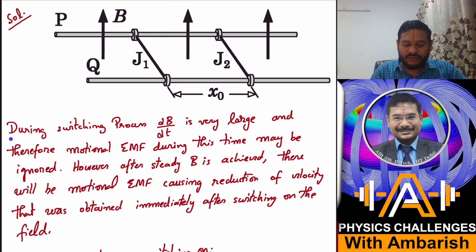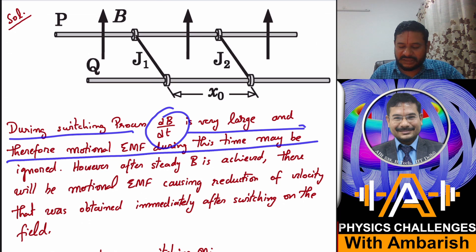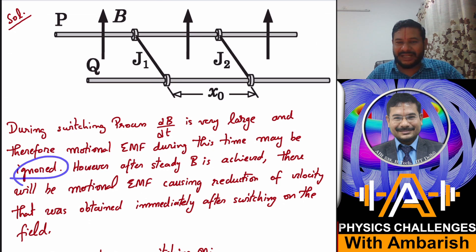But then v cross B dot dl integral, you can assume that that EMF is much much smaller during the switching on process as compared to the EMF due to the changing magnetic field. During the switching process, dB/dt is very large and therefore motional EMF during this time may be ignored in comparison. Of course, if B were given to be some time function, then these two cannot be ignored - they will be comparable and the differential equation will be very very complicated.